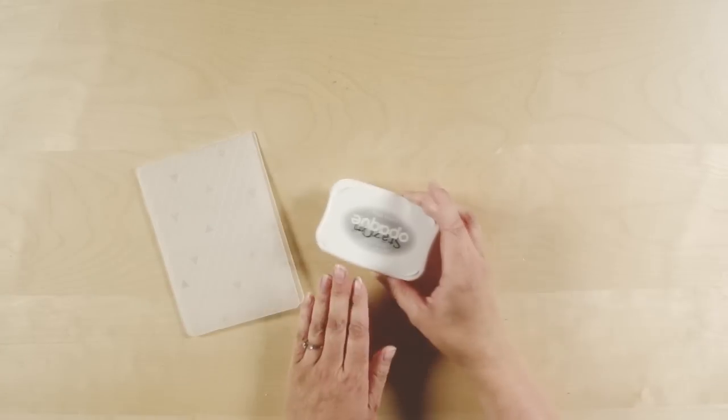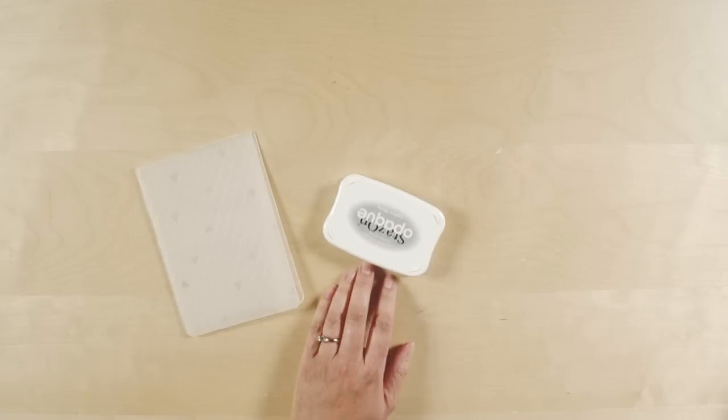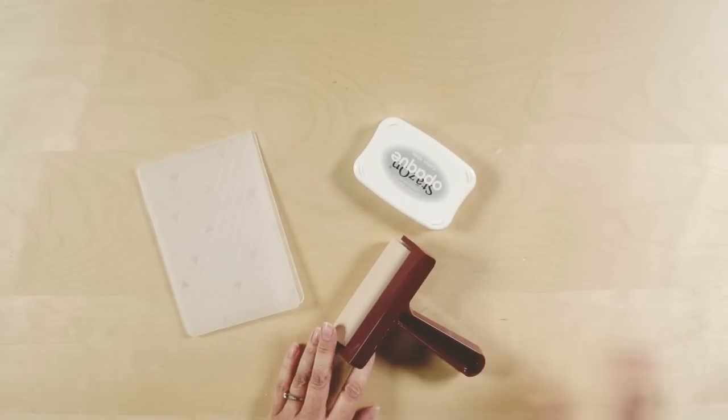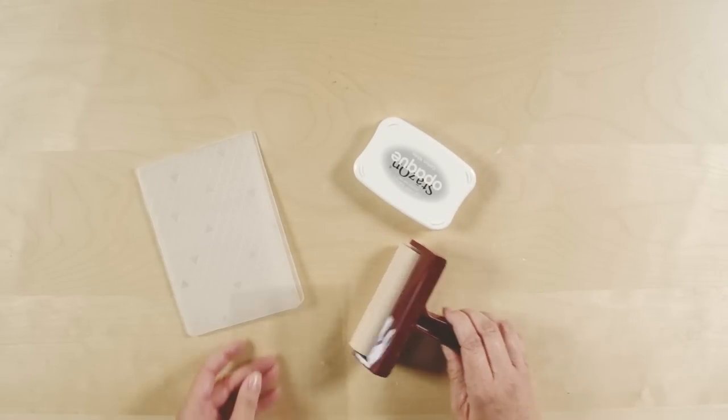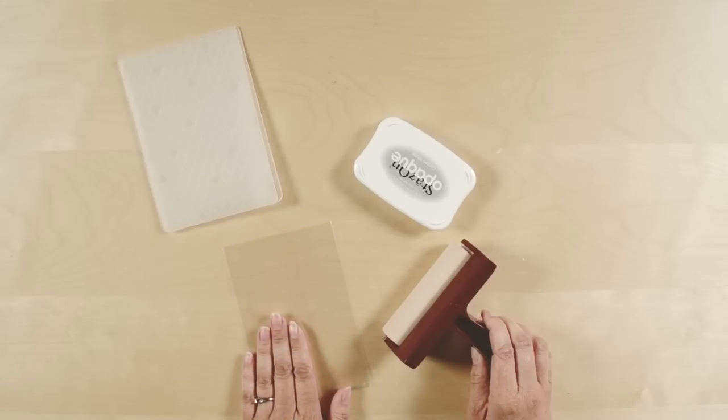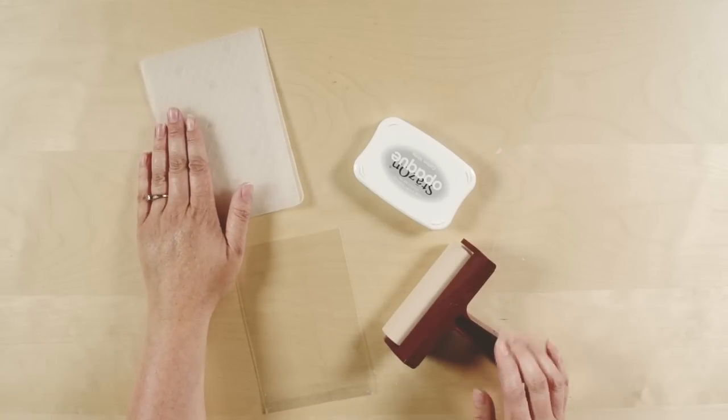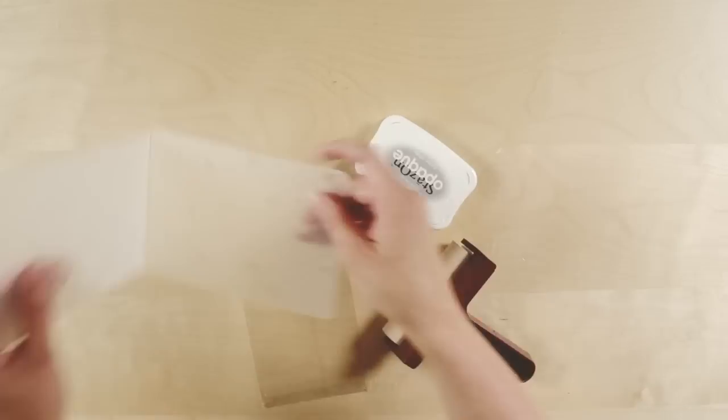I am going to use White Stazon, my brayer, and a 4x6 cellophane bag, as well as that same Tiny Triangles Embossing Folder.